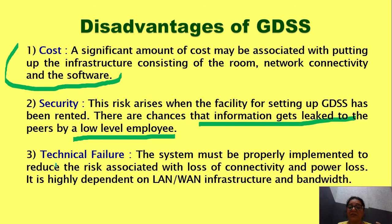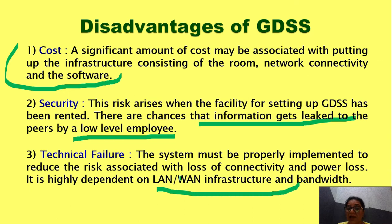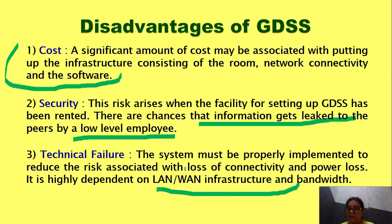The third point is technical failure. The system must be properly implemented to reduce the risk associated with loss of connectivity and power loss. It is highly dependent on the LAN-WAN infrastructure and bandwidth. There should be no loss of connectivity and no power loss in between the meeting, otherwise everything can be lost — recordings, shared documents — and people can get totally disconnected in case a technical failure occurs anywhere.